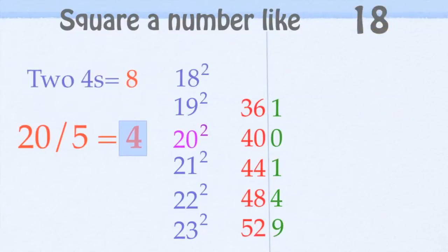18 squared is 2 4's away from 40, is 32. Now 8 times 8 is 64, and we bring our 4 over, and 18 squared is 324.